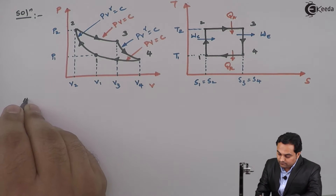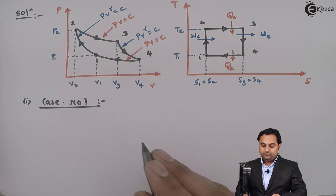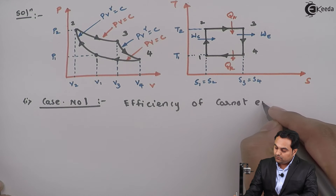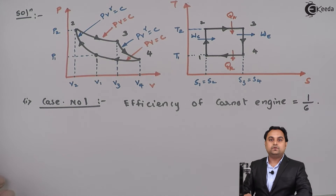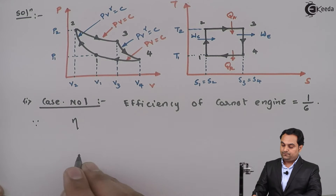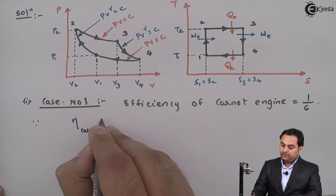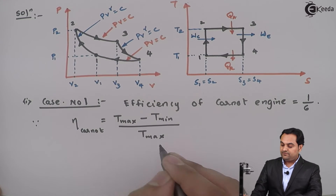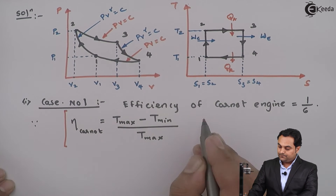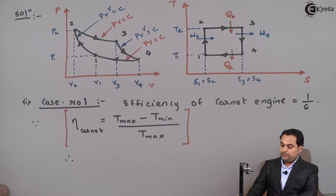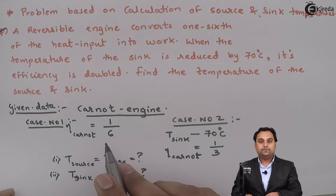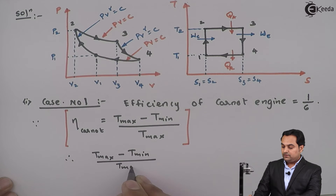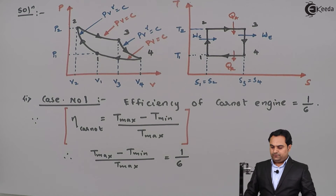Now I will start with Case Number 1. The efficiency of the Carnot engine or reversible engine is equal to 1/6, as given. Since the efficiency of the Carnot cycle can be written as (T_max − T_min) / T_max, and the efficiency is given as 1/6, I will write: (T_max − T_min) / T_max = 1/6.